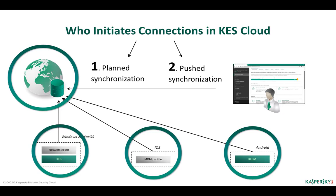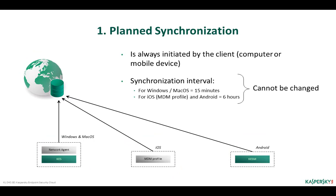Let's elaborate on communications between the Kaspersky Endpoint Security Cloud server and protected devices. Connections can be planned or pushed. Planned synchronization is always initiated by the client — meaning the protected computer or mobile device. Different planned synchronization periods are configured for different devices: Windows or Mac workstations and servers synchronize every 15 minutes; iOS and Android mobile devices every 6 hours. You cannot modify the planned synchronization period in Kaspersky Endpoint Security Cloud.